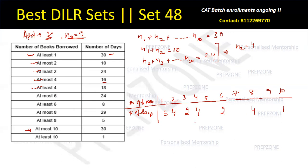At most 6 = 24, so n1+...+n6 = 24. Since n1+...+n4 = 16, we get n5+n6 = 8; and using the pair difference, n5 = 6, n6 = 2. At most 8 = 29, so n7+n8 = 29−24 = 5; with n8 already known as 4, n7 = 1. At most 10 = 30, so n9+n10 = 30−29 = 1. Since one of them is already 1 and the other is 0, n9 = 1 and n10 = 0. The entire table is now filled.